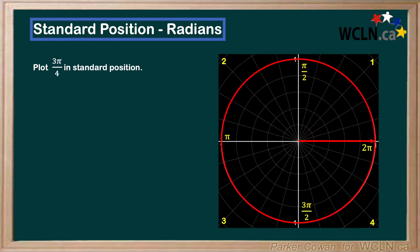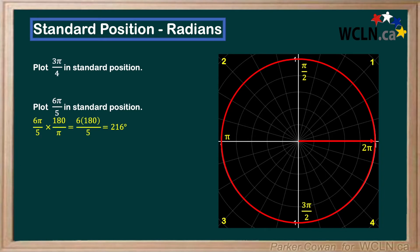Next, we have: plot 6pi over 5. Let's try converting this one into degrees. So, 6pi over 5 times 180 over pi is going to give us 216 degrees. 216 degrees is greater than 180 degrees, but less than 270. So we're going to be in the third quadrant. Then we just go 36 degrees from the negative x-axis, or our pi line.